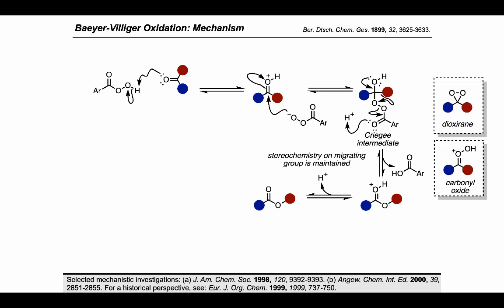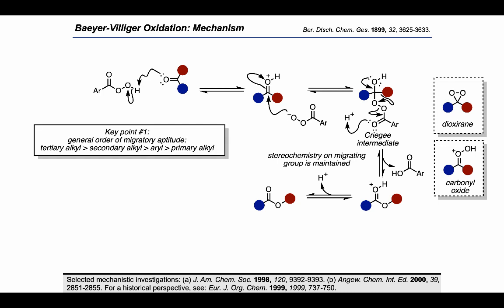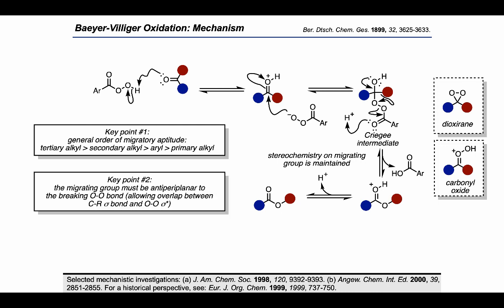I'll quickly bring up two key points. Key point number one: the general order of migratory aptitude has more heavily substituted alkyl groups being more prone to migration than less substituted ones. Key point number two: the migrating group has to be anti-periplanar to the oxygen-oxygen bond that's breaking, in order for there to be overlap between the carbon-carbon sigma bond of the migrating group and the oxygen-oxygen sigma star, which is the key antibonding orbital of the peroxy acid.